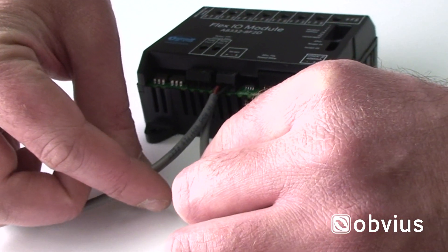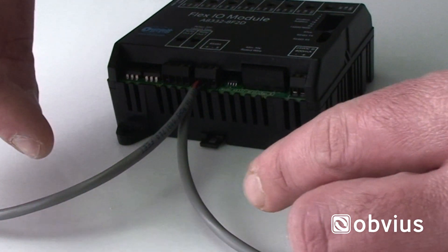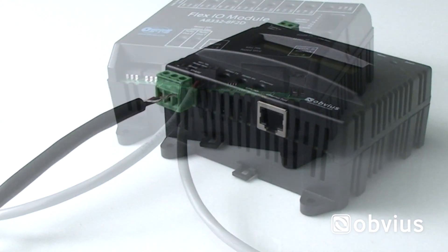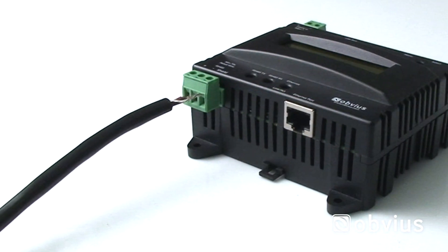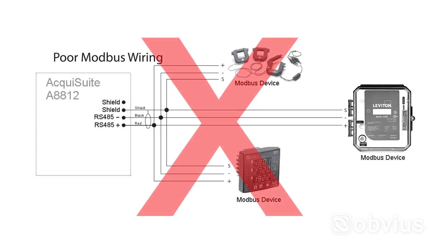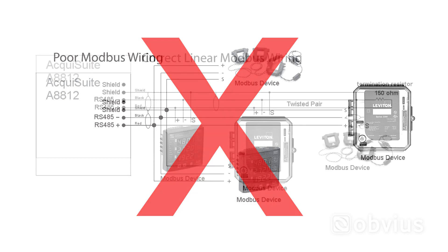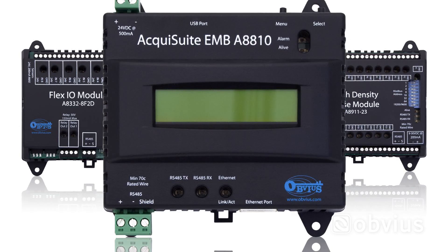To properly implement Daisy Chaining, all devices between the data acquisition server and the last device will have a double landing on each Modbus terminal. The DAS and the last device will be single land devices on each terminal. It is important to avoid having multiple termination points landing on one set of terminals. Limit all terminals to a maximum of two wires, or double landing, where the wiring is done in parallel back to the DAS.